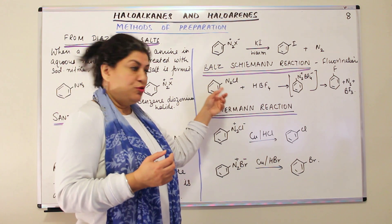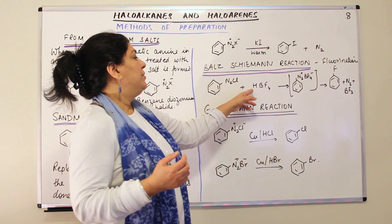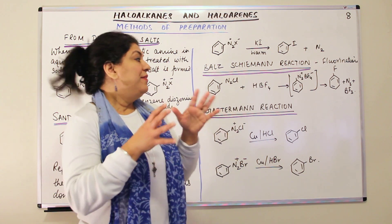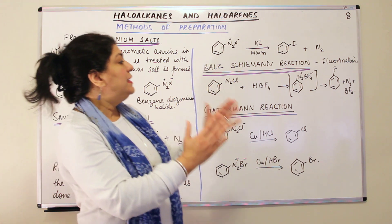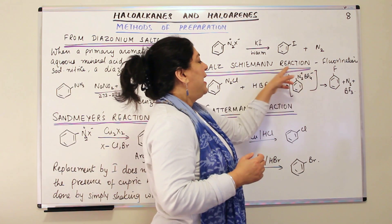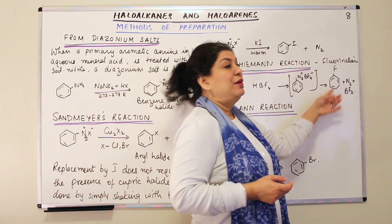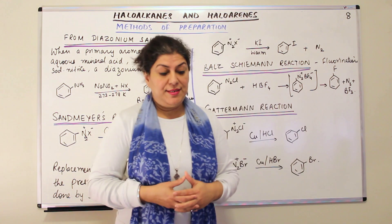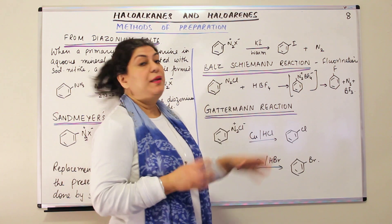How do we carry out the fluorination by Balz-Schiemann reaction? In this, you again take the diazonium salt, like a chlorine or a bromine, and make it react with HBF4. And when you make it react with HBF4, it results in the formation of an intermediate, which is N2BF4 negative. And then this intermediate dissociates to give you the fluorobenzene, nitrogen, and BF3 are released. And this particular reaction is known by the name of Balz-Schiemann reaction.